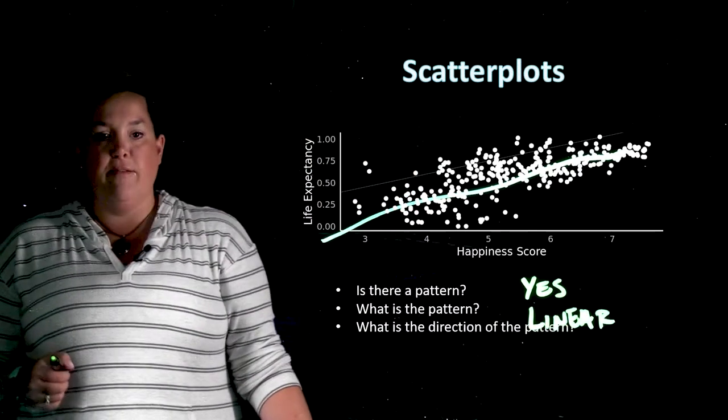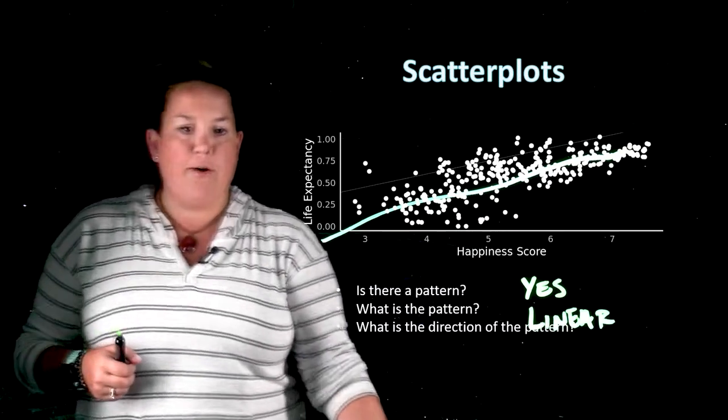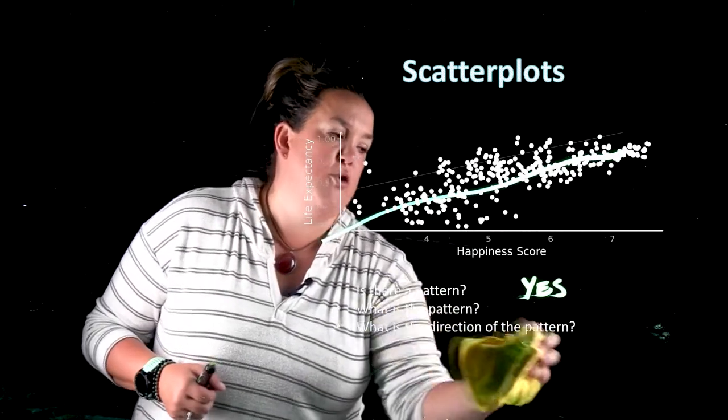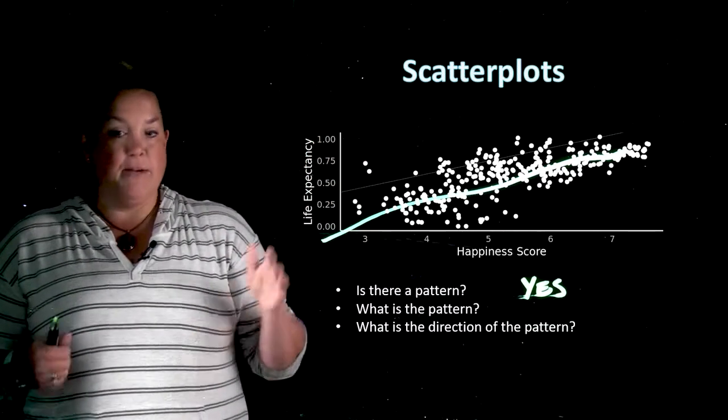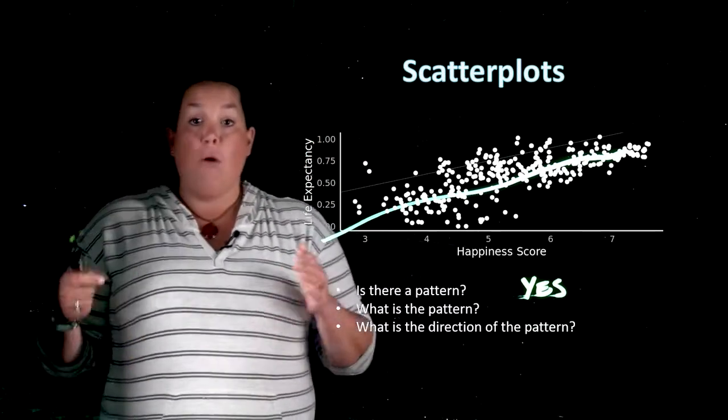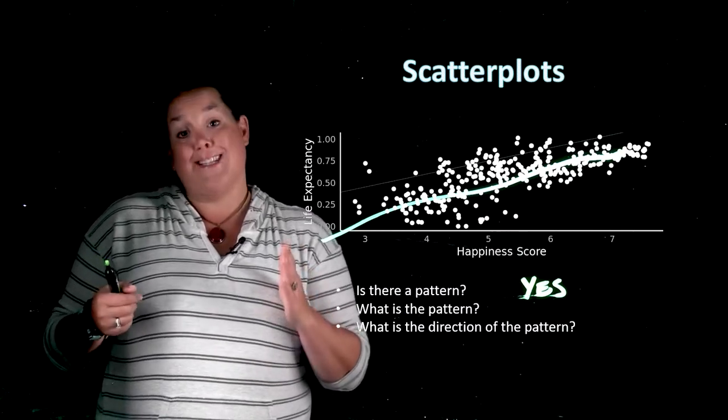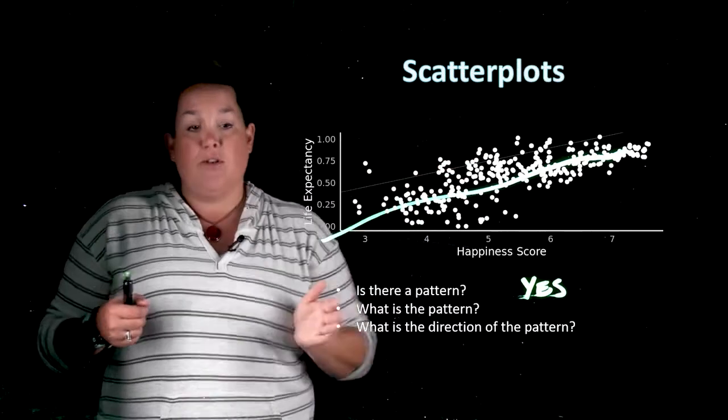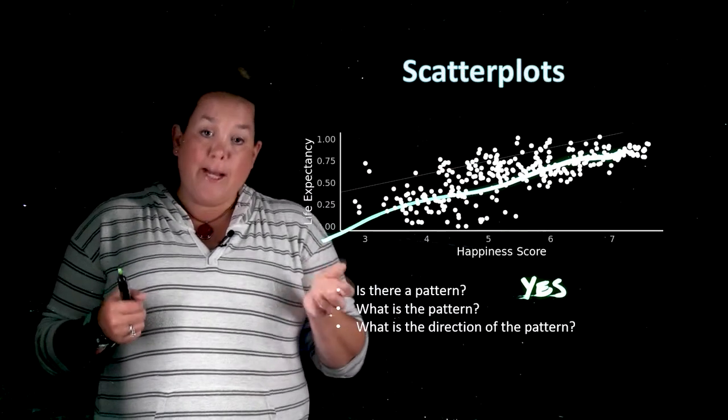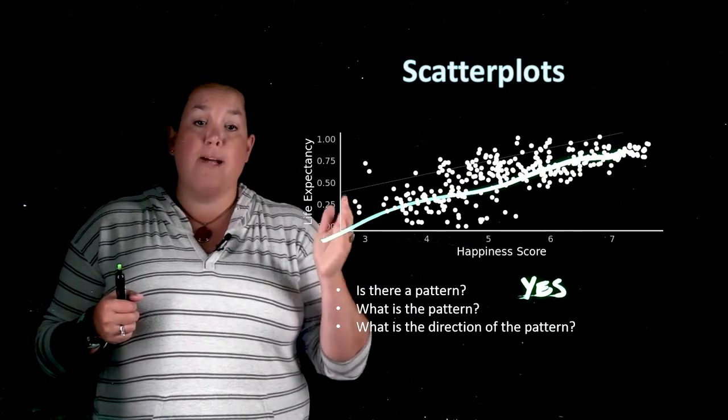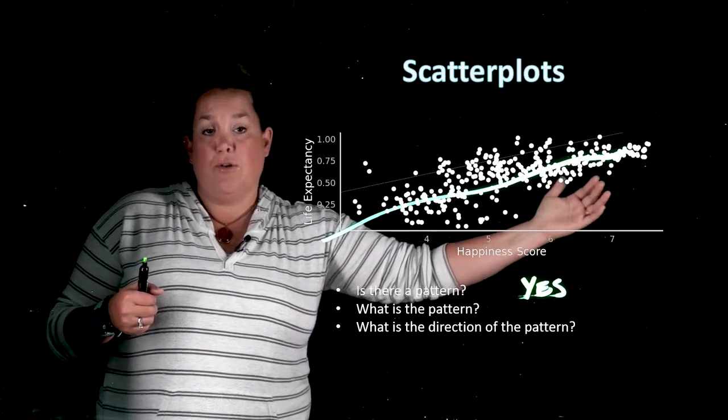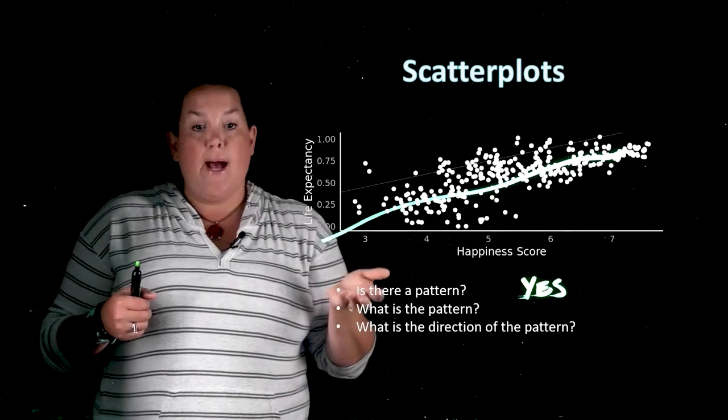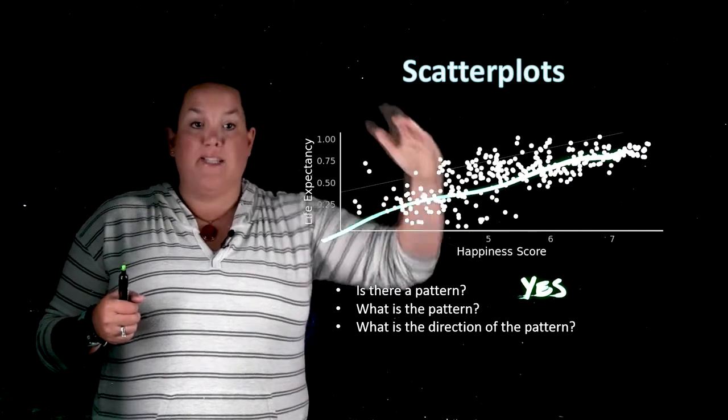Now the next question we have is what is the direction of the pattern? Well when you look at that you have two options: you can have positive or negative direction. A positive direction means that as the x axis increases, the y axis is also increasing. A negative pattern means that as you increase on the x axis, the y axis or the variable on the y axis is decreasing.